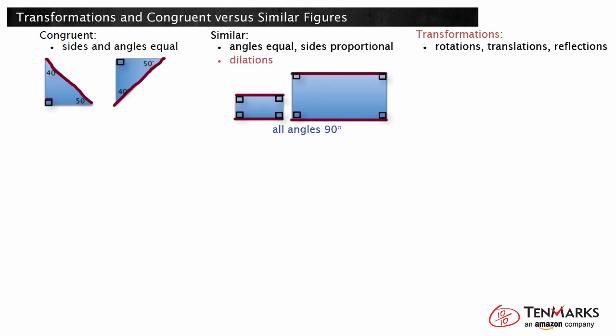Dilations change a shape by increasing or decreasing side lengths by a specific scale factor. After dilation, the side lengths are proportional, so the figures are similar.